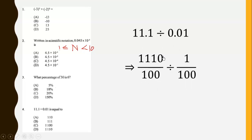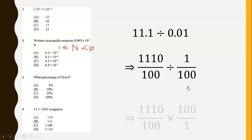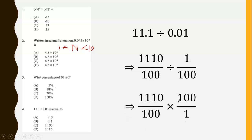We want to simplify 11.1 divided by 0.01. One way is to write all of them as a fraction with a common denominator, so we have this over 100 divided by this over 100. Then we multiply by the reciprocal and cancel out to obtain the answer, which is D.